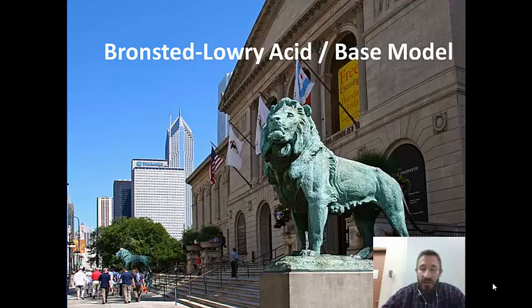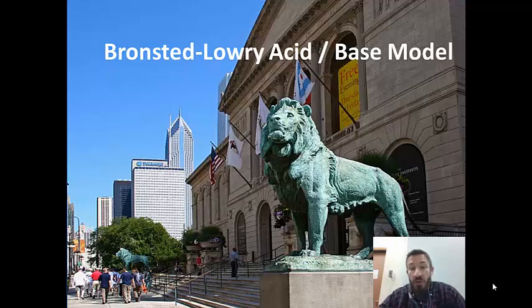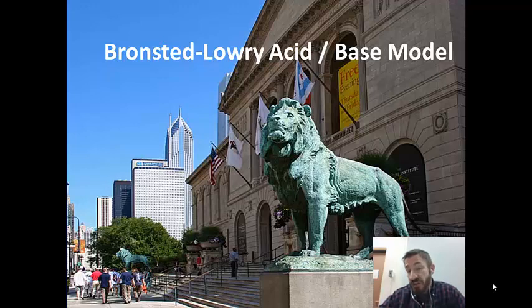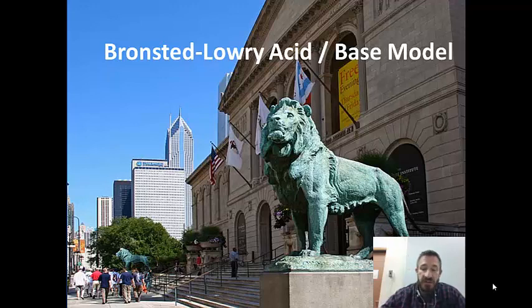Bronsted-Lowry Acid Base Model — that's what we're going to learn about today. You may wonder why there's a picture of the Art Institute of Chicago. One reason is because the statue here has been exposed to a great deal of acid rain, and over years and years, parts of the statue have deteriorated. So we see acid rain is an important concept when we talk about acids and bases.